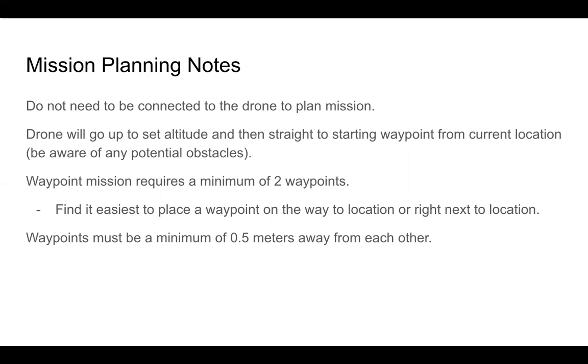Another stipulation is that waypoints must be greater than half a meter away from each other. You could place your second waypoint about three feet or so away from your first waypoint and you'd be good to go.